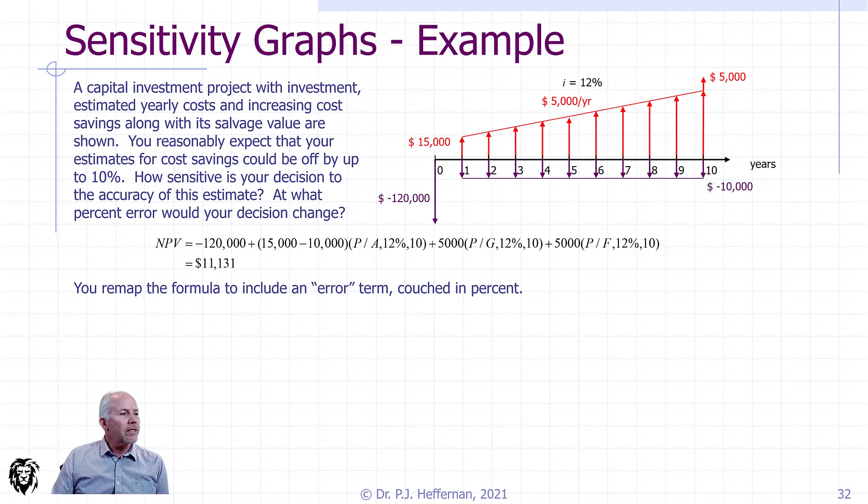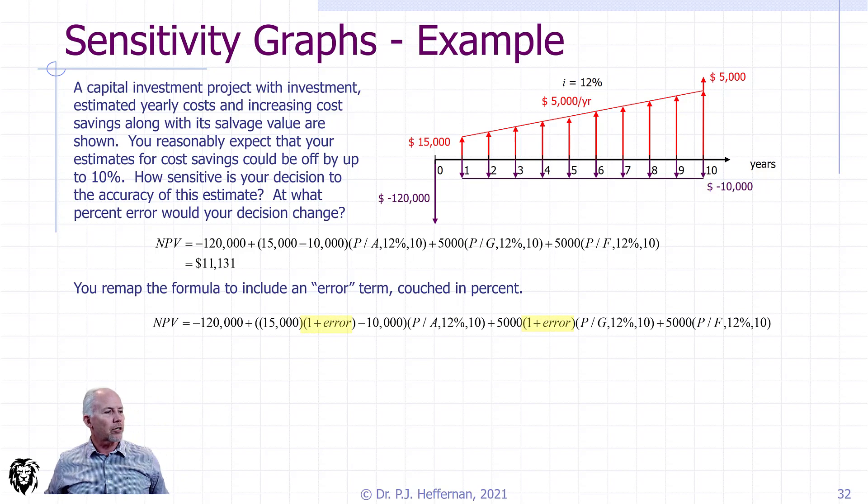What we need to do is to take this formula then that we've done out and isolate the term that we're interested in. We're concerned about errors in our cost savings estimates, they may be off by up to 10%. So we need to isolate those cost savings terms and see where they are.